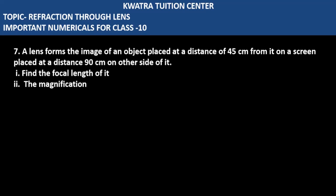Let's start with question number 7. It says a lens forms the image of an object placed at a distance of 45 cm from it on a screen placed at a distance 90 cm on the other side of it. So what does this mean?